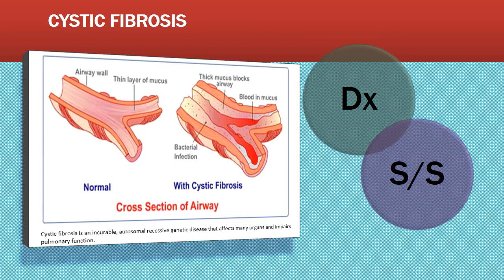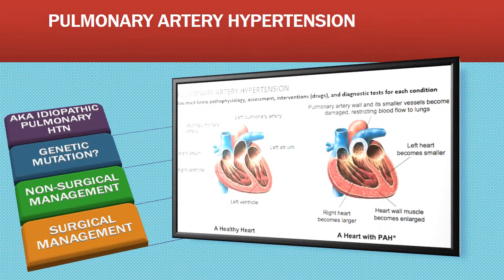Surgical management for cystic fibrosis may include a lung or pancreatic transplant. Primary pulmonary arterial hypertension, also known as idiopathic pulmonary hypertension, occurs in the absence of other lung diseases and has an unknown cause, though exposure to some drugs increases the risk. Most patients present with a genetic mutation. Dyspnea and fatigue are early symptoms in an otherwise healthy adult, and they may have chest pain. Non-surgical interventions aim at reducing pulmonary pressure and preventing complications. Surgical management may involve single or whole lung transplantation.